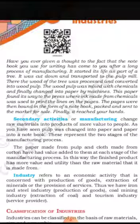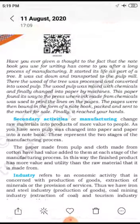As you have seen, pulp was changed into paper and paper into a notebook. These represent two stages of the manufacturing process. The paper made from pulp and the clothes made from cotton have had value added at each stage. For example, if cotton costs 100 rupees, after processing into cloth the cost becomes 150 rupees — the extra 50 rupees is the value added. The finished product has more value and utility than the raw material.